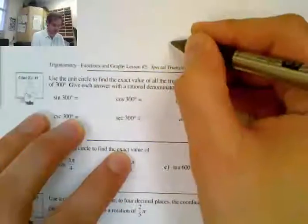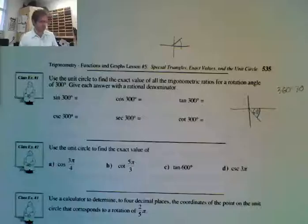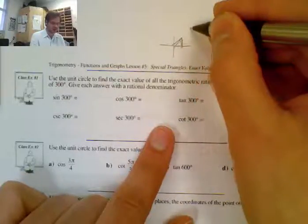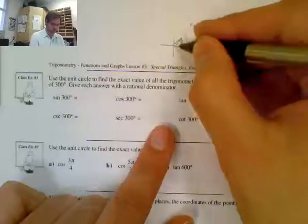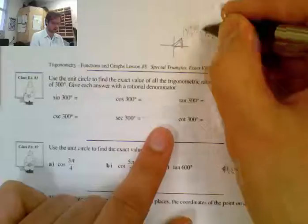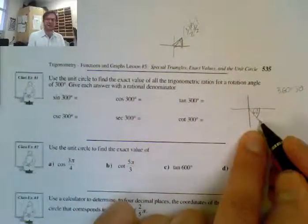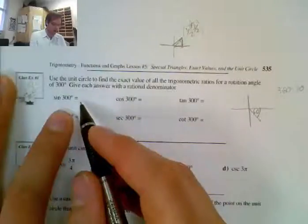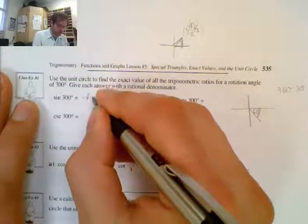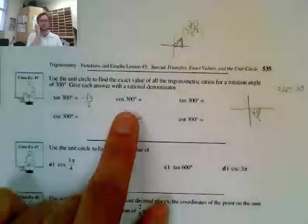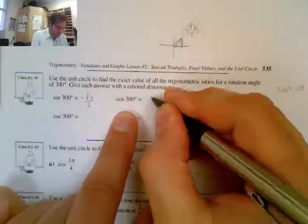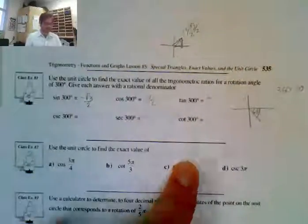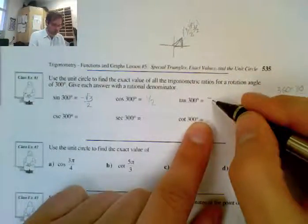With a reference angle of 60°: y is the biggest value, so that's √3 over 2; and x is the smallest for 60°, so that's 1 over 2. But it's in quadrant 4, so all y values are negative and all x's are positive. Therefore sin 300° = −√3/2, cos 300° = 1/2, and tan 300° = y/x = −√3.